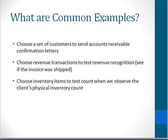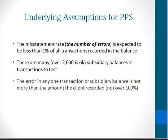Or, we might use PPS sampling to choose inventory items to test count when we observe a client's physical inventory. Some underlying assumptions for PPS — things that are supposed to be true if we're using this kind of sampling — are the misstatement rate, or the number of errors. The number of errors is expected to be less than 1% of all the transactions. This is not talking about how much the account is misstated by; this is talking about the number of different errors that there are.